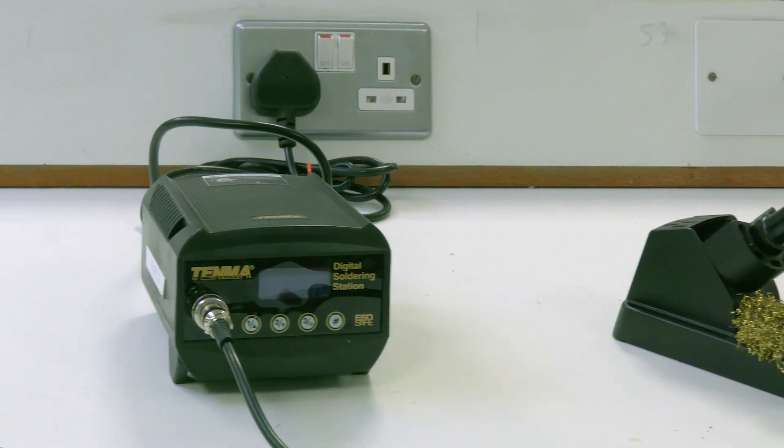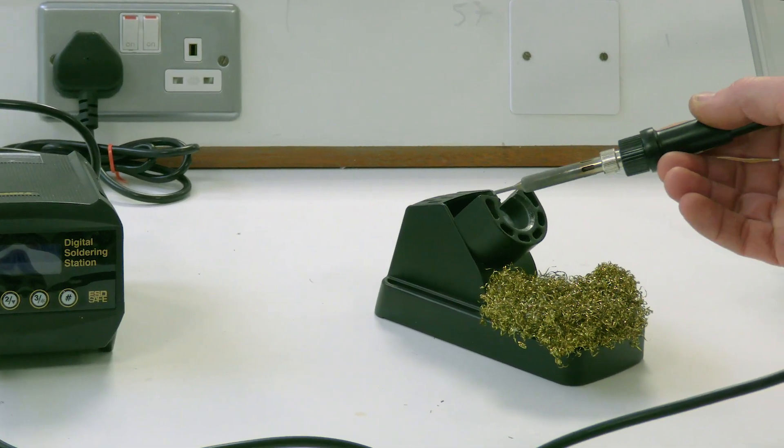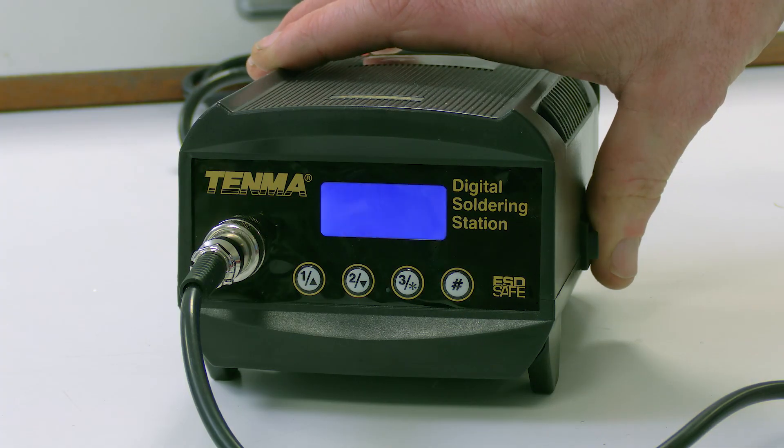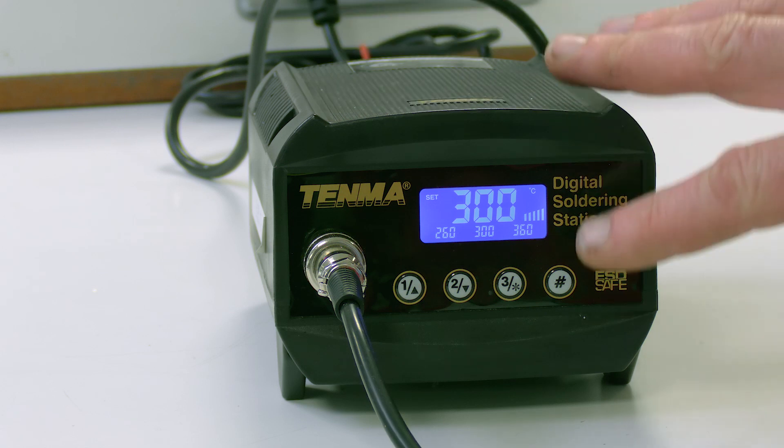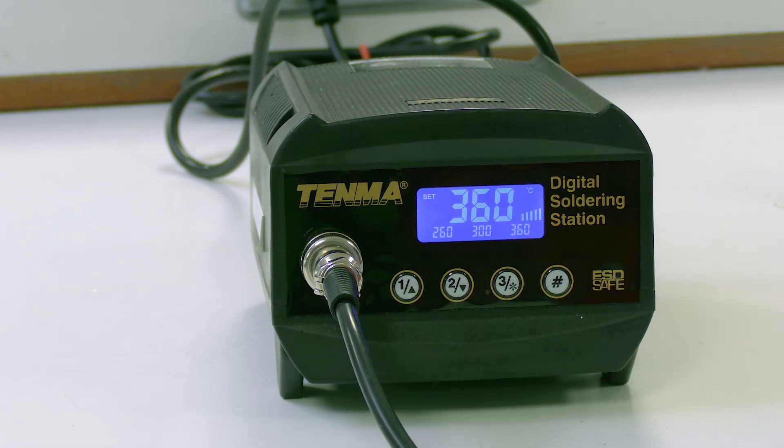We'll be using this digital soldering station which has controls and a display to set the temperature of a soldering iron used to melt the solder. Set the temperature using the preset for lead-free solder. Then wait for the iron to heat up.